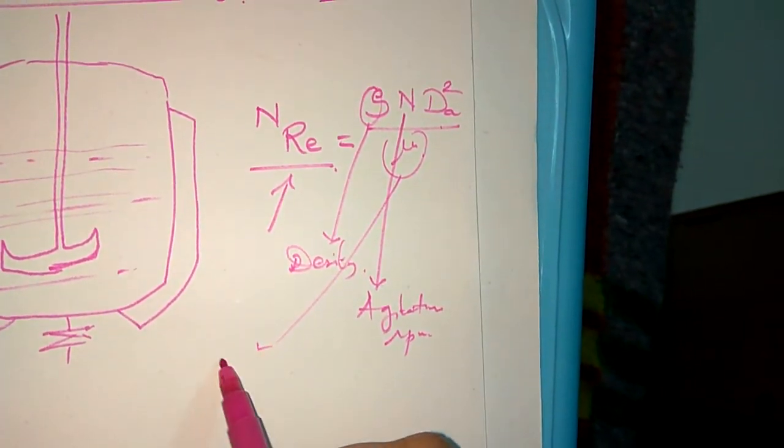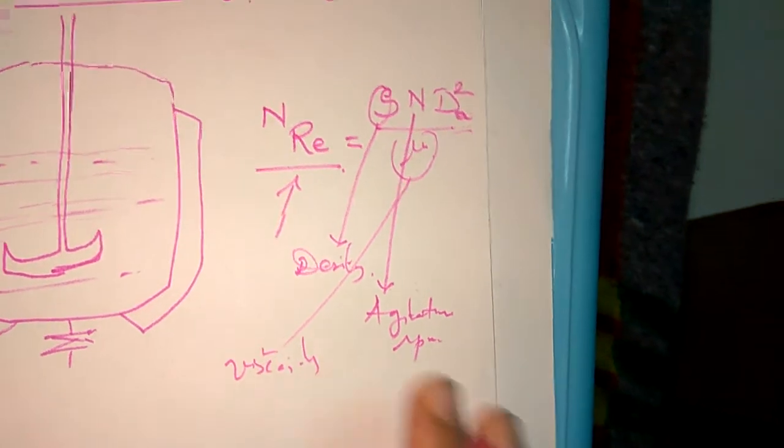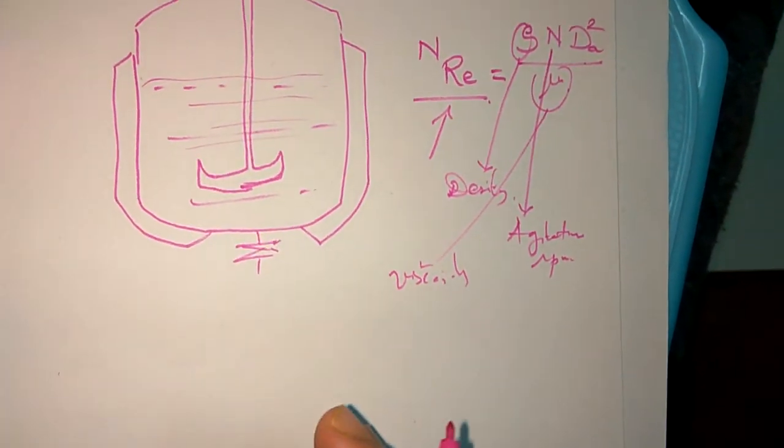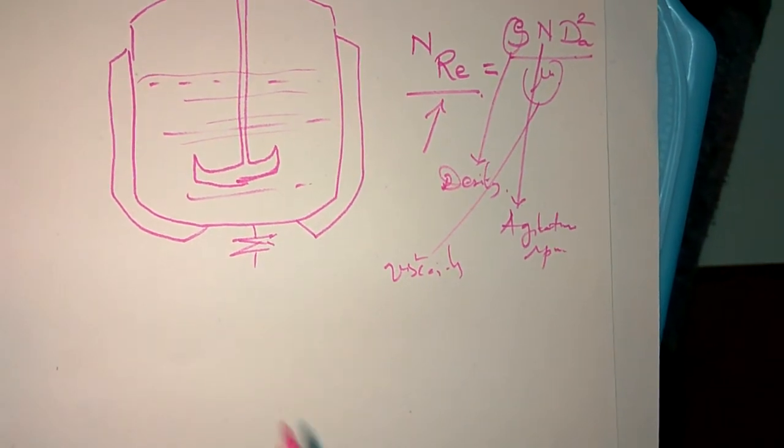D_a is the diameter of agitator or the sweep diameter, and this mu is the viscosity. So these are the terms.